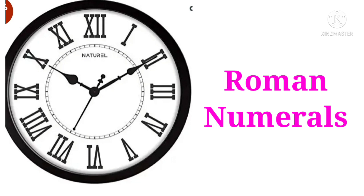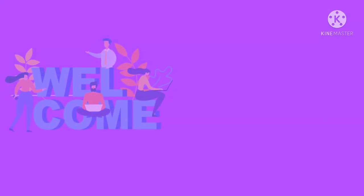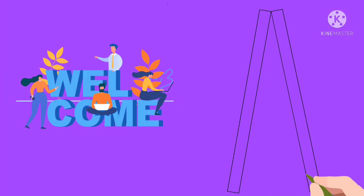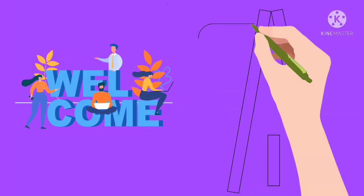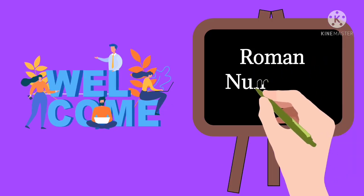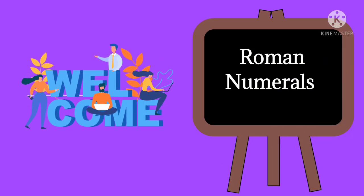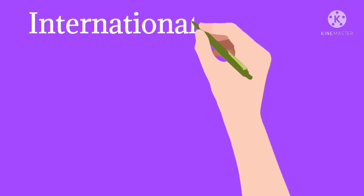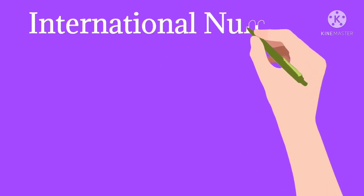The letter I was the symbol used for 1, V for 5, and X for 10. Now we are going to learn how to write Roman numerals 1 to 20. You know the difference between international numerals and Roman numerals.